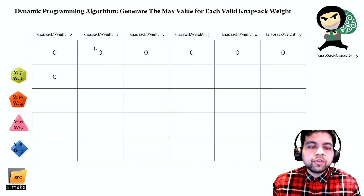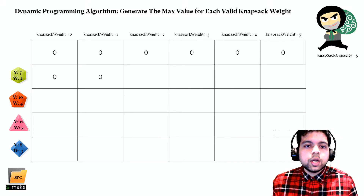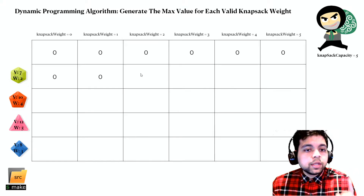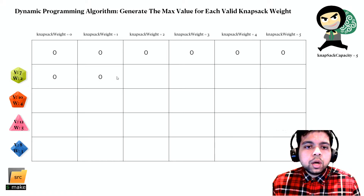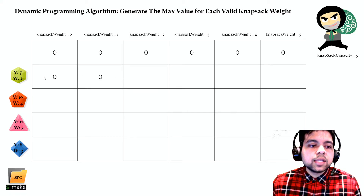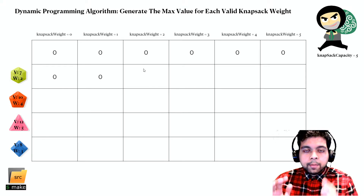At knapsack weight of two we can now take this gem, so we have a choice. If we don't take it, we use the previous row's value — zero. If we do take it, we add this gem's value (7) plus the best value achievable with the remaining capacity: previous item at weight (2 minus 2) = 0. So 7 plus 0 versus 0 — maximum is 7. At weight three: not taking gives zero; taking gives 7 plus previous item at weight (3 minus 2) = 1, which is also zero. So 7 plus 0 versus 0 — we pick seven.